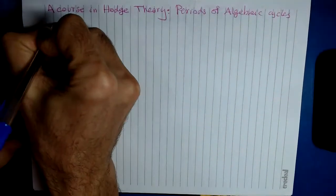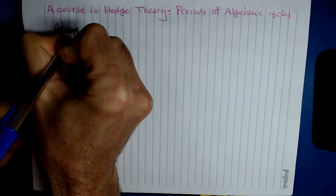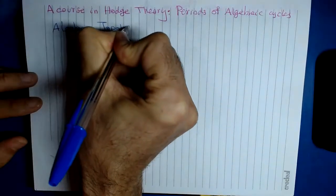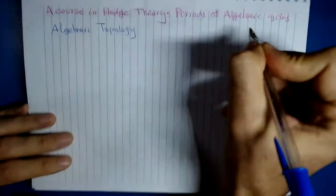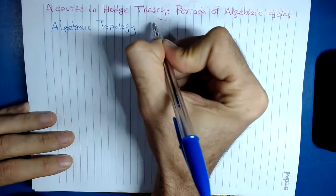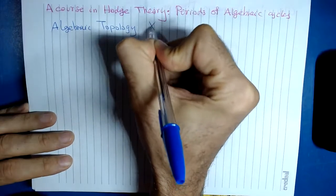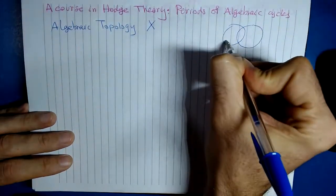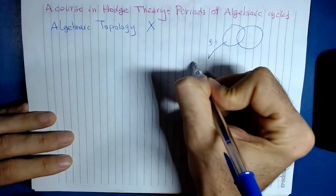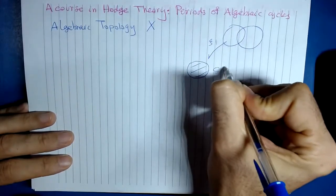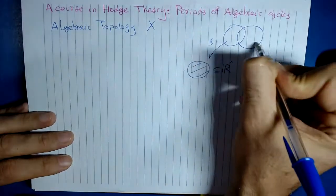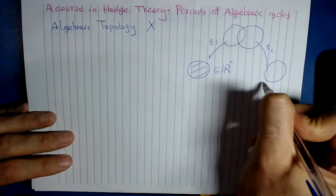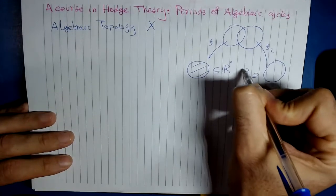The first thing that we'll learn in a course of algebraic topology: we first construct a manifold, let's call it X, by charts. So let's say zeta 1 going to some open sets in R^n, then another chart zeta 2 going to another open set again in R^n.